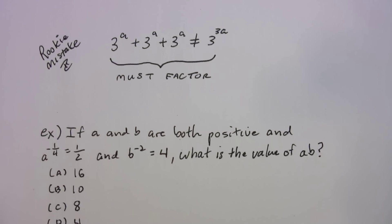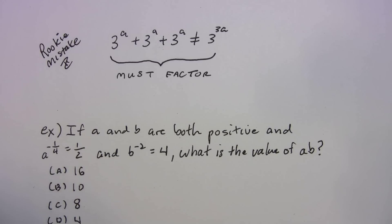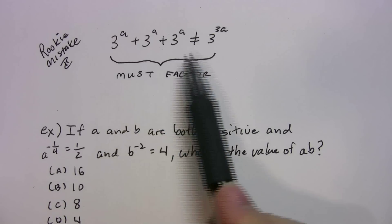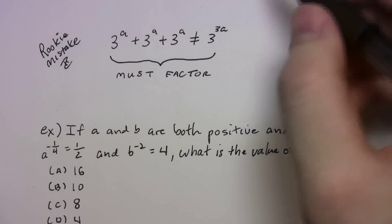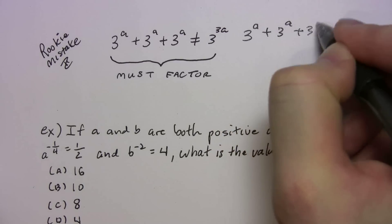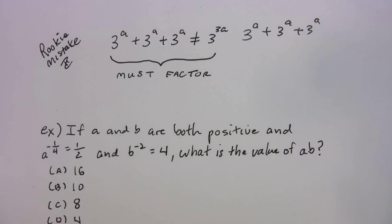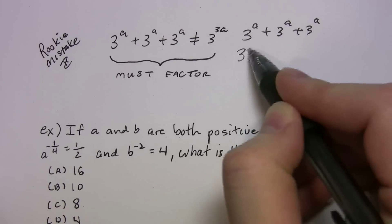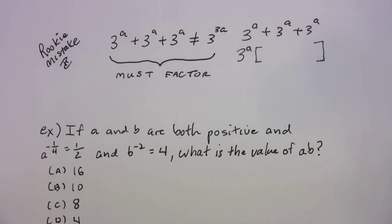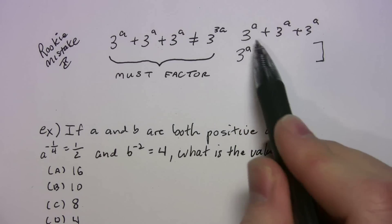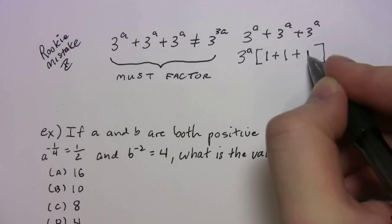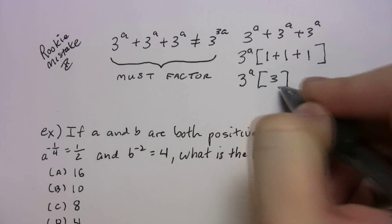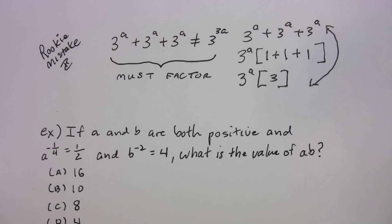Here's another rookie mistake: if you have three to the a plus three to the a plus three to the a, that does not equal three to the three a. You must factor in this situation. The trap is that you add all the exponents, but you can only do that when multiplying numbers with like bases — we're adding here. Factor out the biggest common factor, which is three to the a. Inside the brackets: three to the a times one, plus three to the a times one, plus three to the a times one — so that's three to the a times three. These two expressions are the same exact thing.